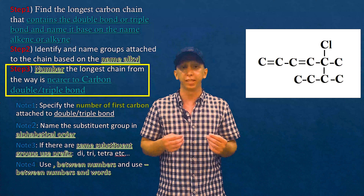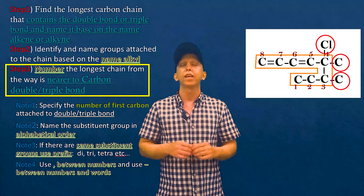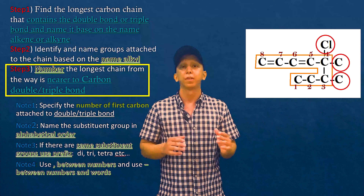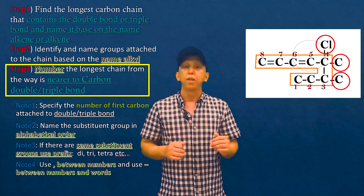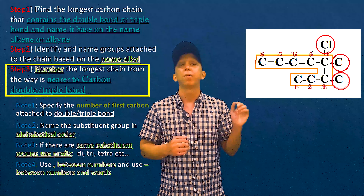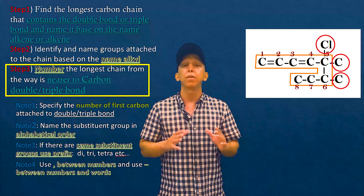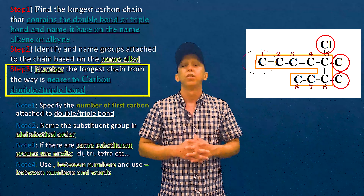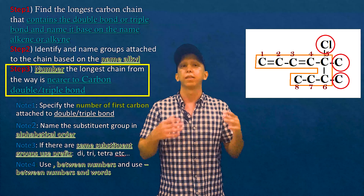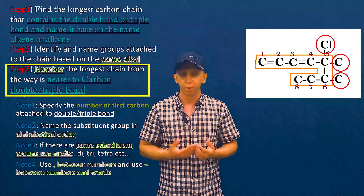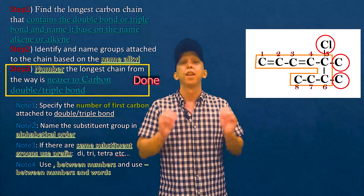In step three we have to start numbering our main chain. If we start numbering from bottom to top, we face the double bond at carbon number five. If we start numbering from top to bottom, we see the first carbon attached to the double bond at carbon number one. So the right way for numbering is top to bottom, because it gives the double bond the lower number.